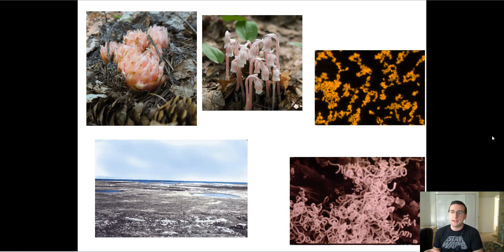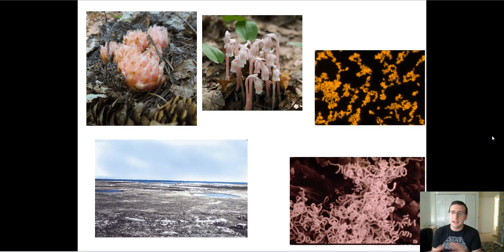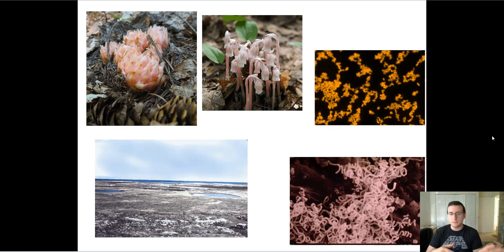Mycoheterotrophs are the ones that are actually parasite plants — they essentially consume the fungus as part of their process of creating energy, and they need both that and photosynthesis to live. So it's not as simple as a typical plant. That's the one you see in the middle there — another kind of orchid family.